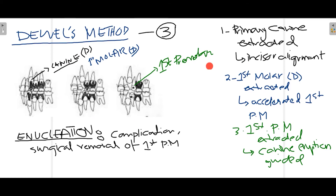In Dewel's method, three steps involving three different extractions are performed. In the first step, the deciduous canine — the primary canine marked with an X in the image — is extracted. The main reason for extracting the primary canine is so that the permanent incisors, which will erupt, achieve normal and ideal alignment.